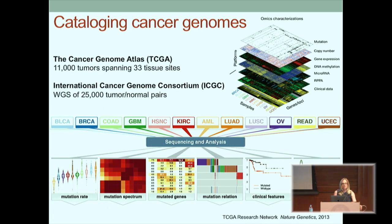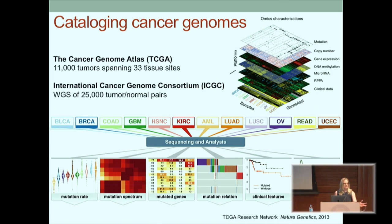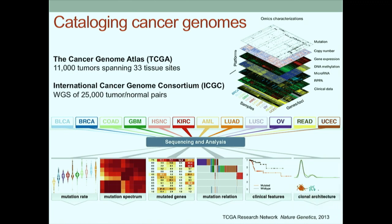There remains a tremendous challenge in how we really assimilate all of this information and link it to clinical outcomes. The TCGA and ICGC studies have largely focused on profiling a single bulk tumor specimen. This is in part due to practical considerations around large-scale efforts, the challenges of obtaining multiple samples, the cost, and the initial tissue input requirements.